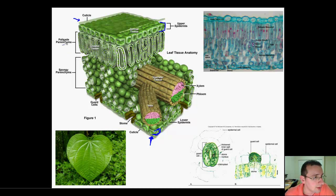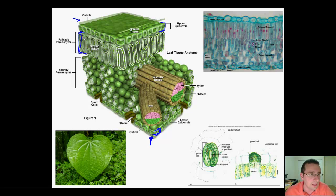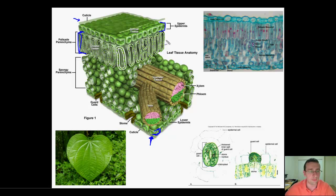You also see the palisade parenchyma, which is a ground tissue, the same kind of thing that started at the shoot. What this is is an insulation layer - it basically protects the plant from the heat of the sun. You're going to start seeing chloroplasts here, but the majority of the chloroplasts are going to be in the bottom layer.